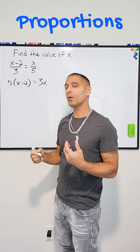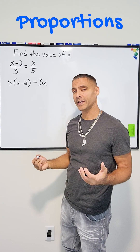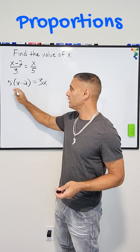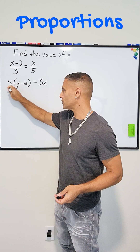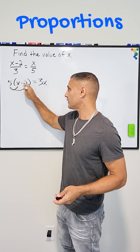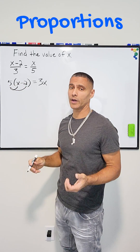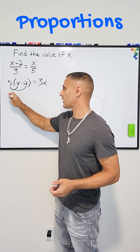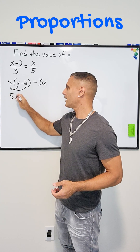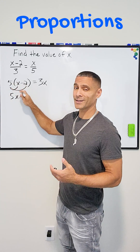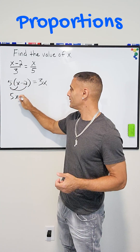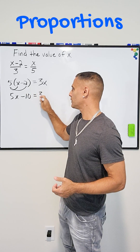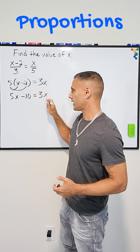Now what we're going to do is just solve for x by isolating our variable. We're going to start by using the distributive property to rewrite the left-hand side of our equation. So we multiply 5 times x, that is 5x, and 5 times negative 2 is negative 10, and we set that equal to 3x.